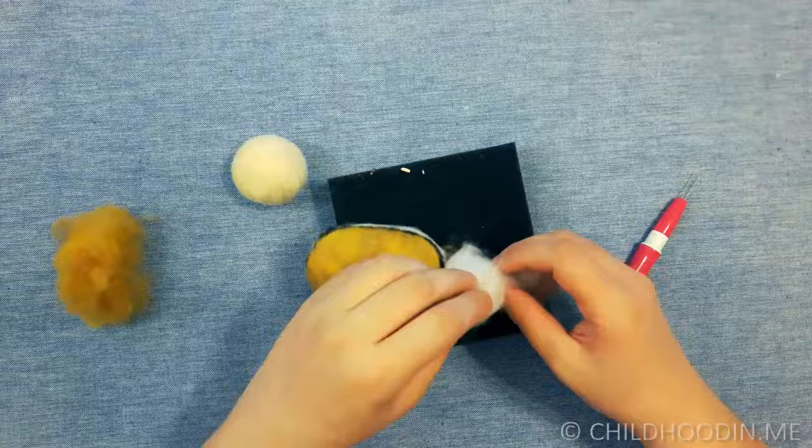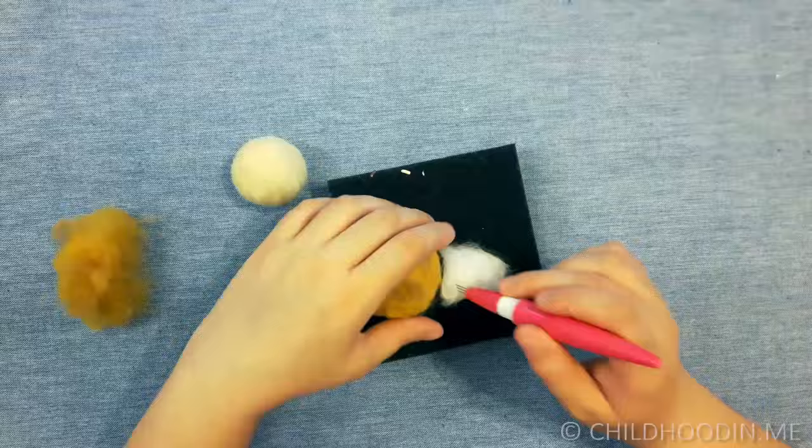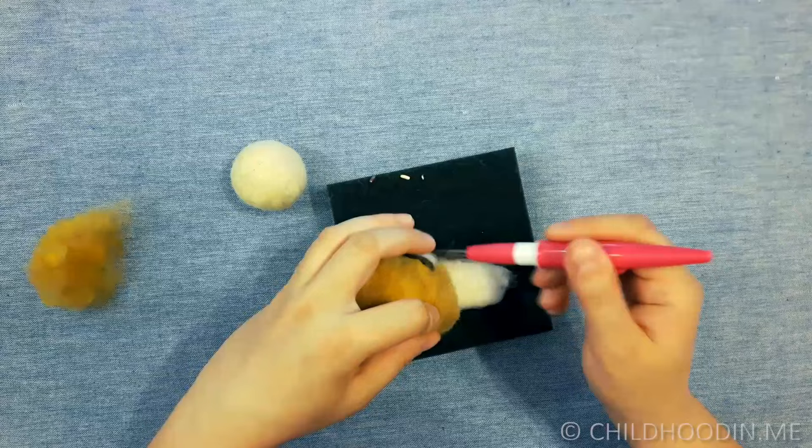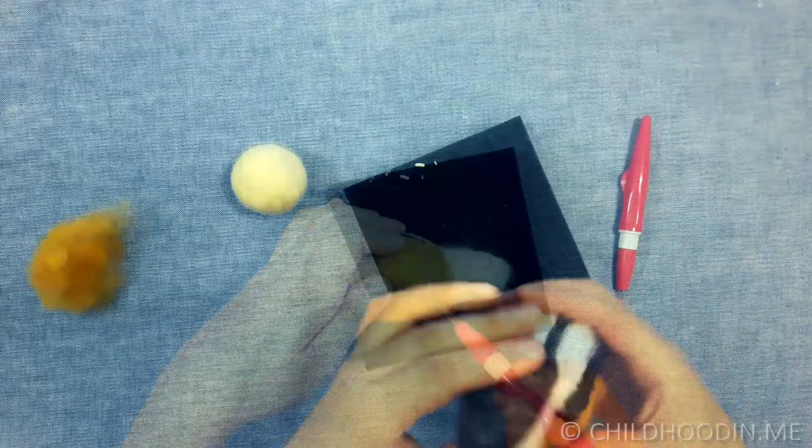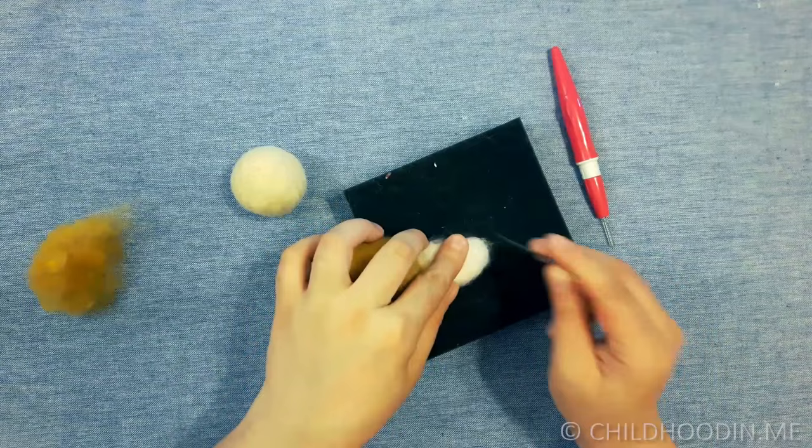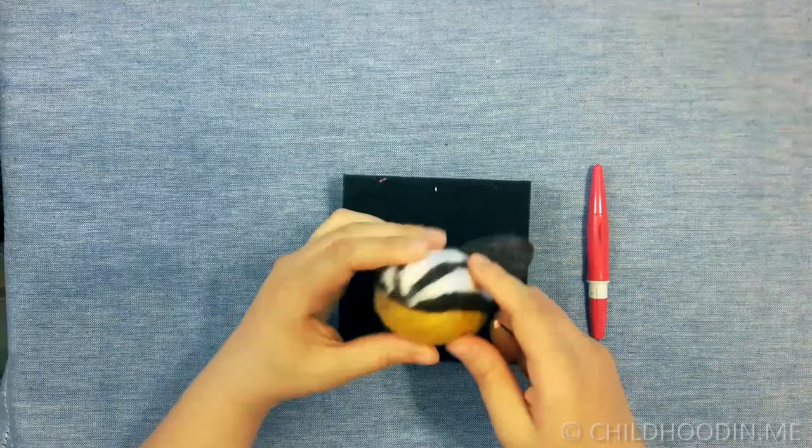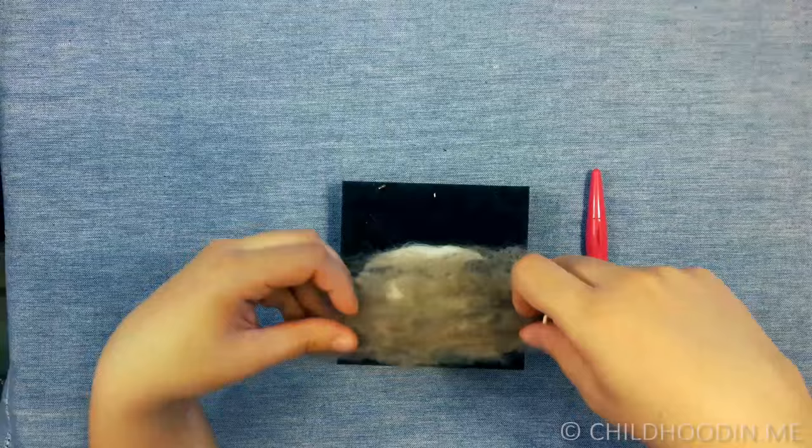Add some more white roving to the tail to make it look nicer. Also add some yellow mix between the tail and the body to make it firmer. Now add some light brown on top of the back and the tail.